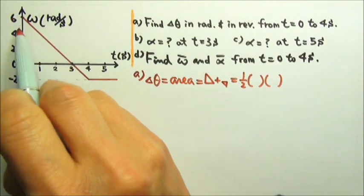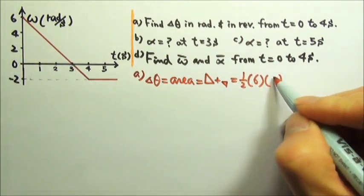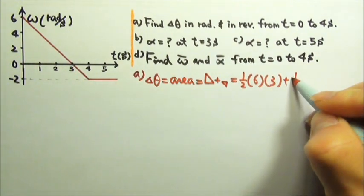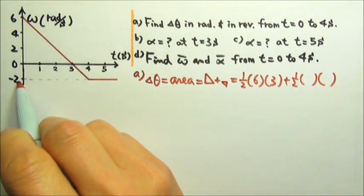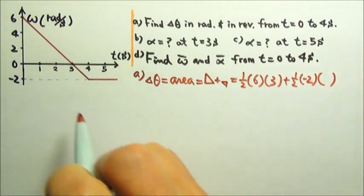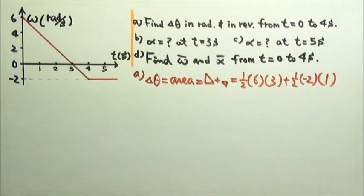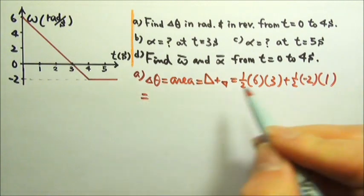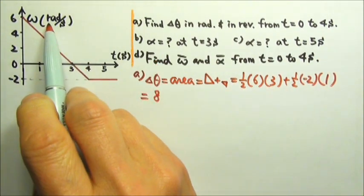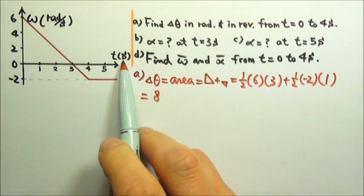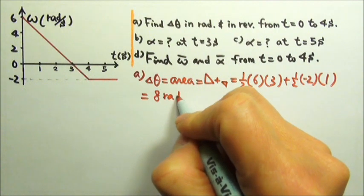For the larger triangle, the height is six and the base is three. For the smaller one, the height is negative two and the base goes from three to four, so it's one. This gives us eight, and the units are radians per second times seconds, which means this is in radians.